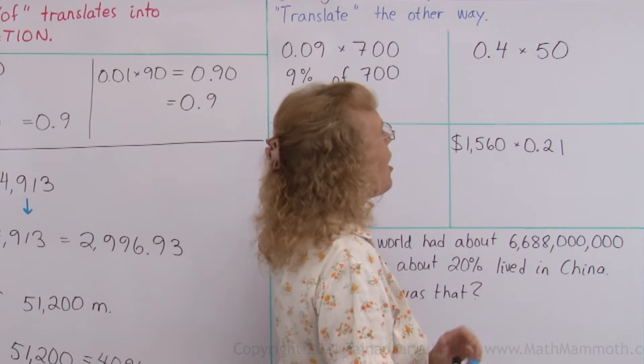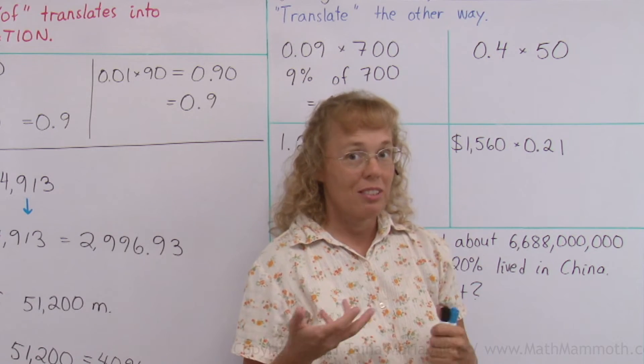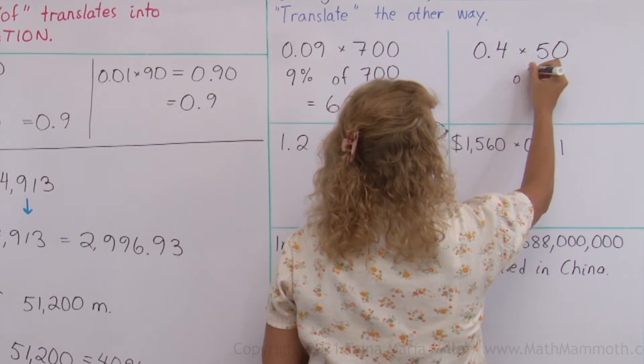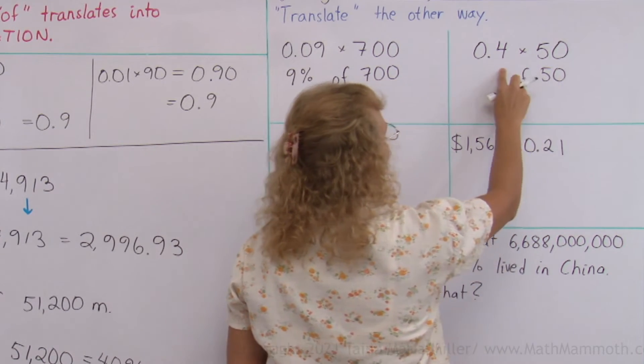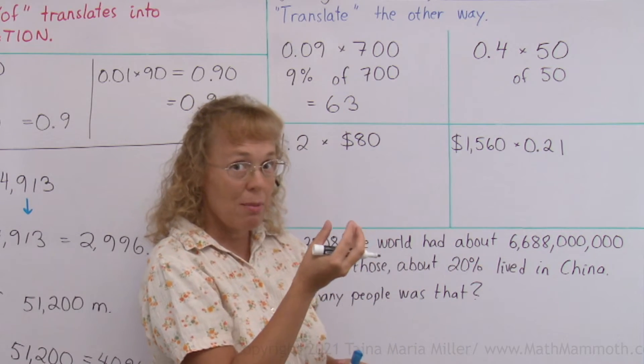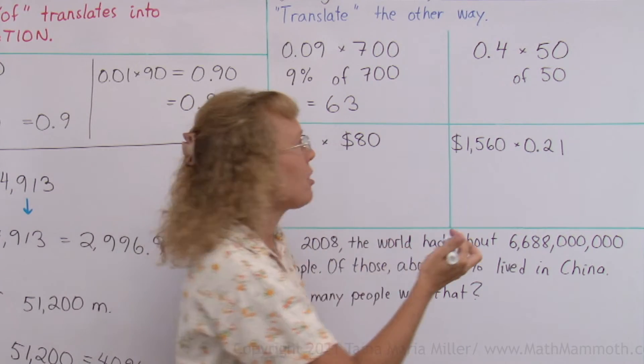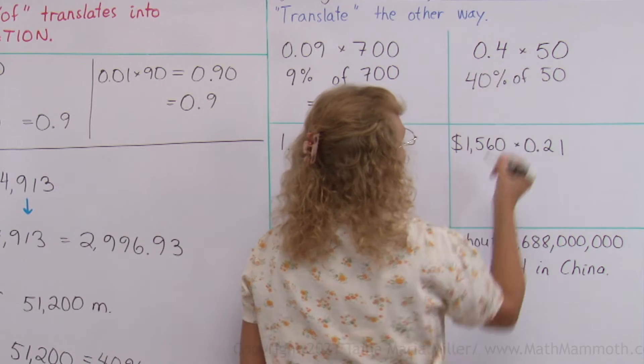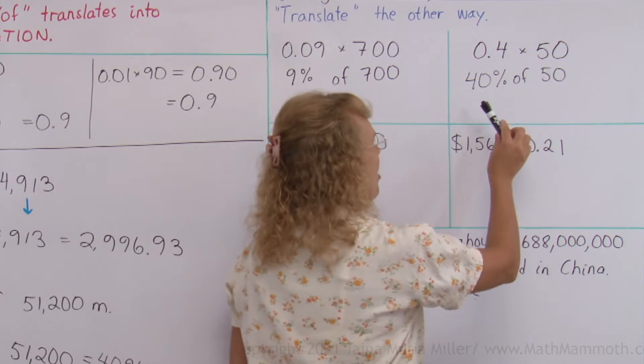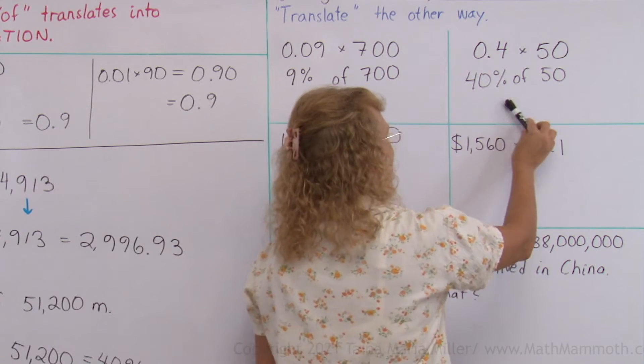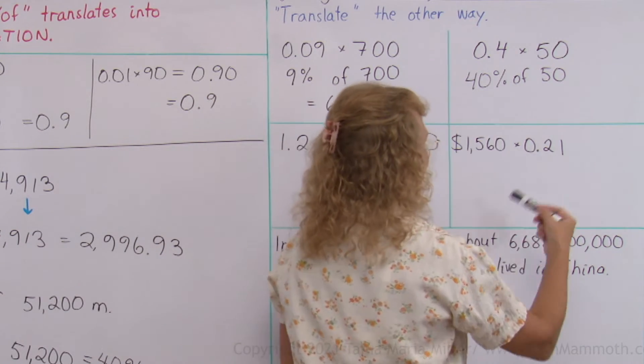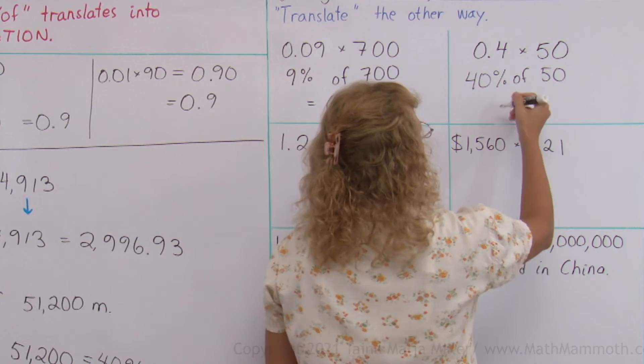0.4 times 50. We're going to translate it back into a percent of something. 0.4 as a percentage. It is 4 tenths, which is the same as 40 hundredths. It is 40%, 40% of 50. You can think of 10% of 50. 10% of 50 would be just 5. And 40% is 4 times that, 4 times 5. It is 20.